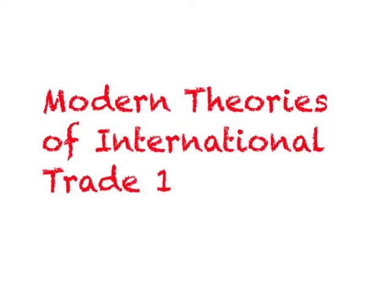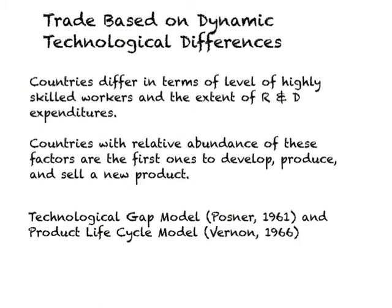Let us look at some theories which are able to explain world trade not explained by the HOS model. I call them modern theories of international trade simply because all of them were developed after the HOS model was developed. The first theory we examine will explain foreign trade based on dynamic technological differences. In this world, there are some countries which are technologically advanced and some which are not. A technologically advanced country has a high level of skilled workers and spends more money on research and development.